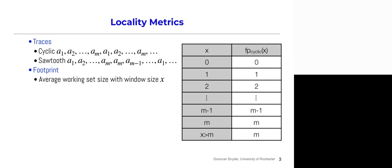Let's look at locality metrics for these two traces — cyclic and sawtooth. Looking at the footprint first: if we take a sliding window of size x, as we go through a trace with a window size of one there will only ever be one element in it; a window of two gives two distinct elements, all the way up to trace size m. With window size m-1 we still contain m elements, so the working set edge will be a maximum of m.